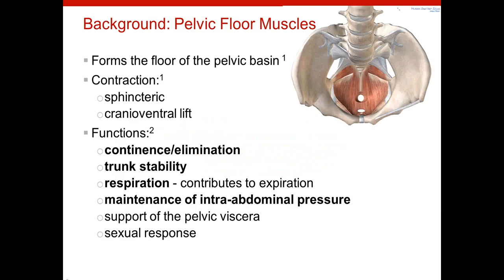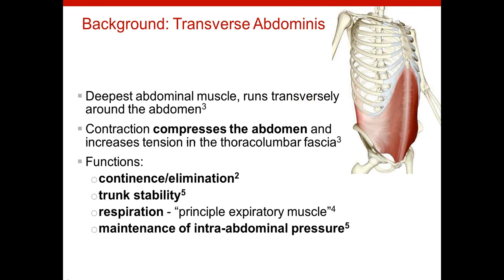I'm going to share some background that will be pertinent as we go forward talking about this project. The pelvic floor muscles form the floor of the pelvic basin, and their job is to contract — with this contraction there's a sphincteric closure action and a cranial ventral lift action. They play a role in continence and elimination, trunk stability, respiration, and maintenance of intra-abdominal pressure. The transverse abdominus is the deepest abdominal muscle whose fibers run transversely around the abdomen. When it contracts, it compresses the abdomen like a muscular corset, and it too plays a role in continence and elimination, trunk stability, respiration, and maintenance of intra-abdominal pressure.